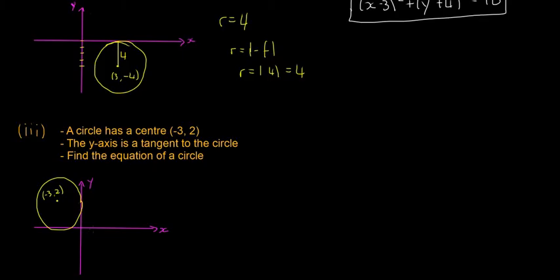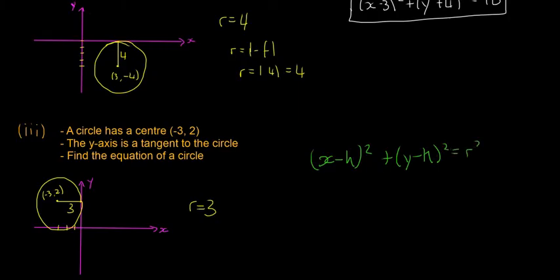We know this is minus 3 on the x-axis, so it goes minus 1, minus 2, minus 3 — meaning it's 3 away from the y-axis. That distance is going to be 3, and that means the radius is equal to 3. Plugging into the formula x minus h squared plus y minus k squared equals r squared, with h equal to minus 3, we get x plus 3 squared plus y minus 2 squared is equal to 9.